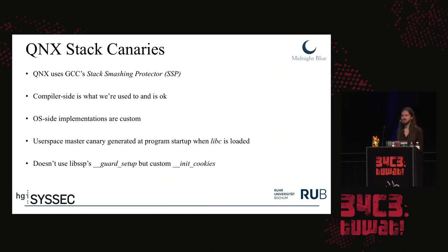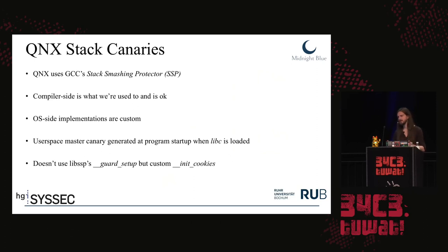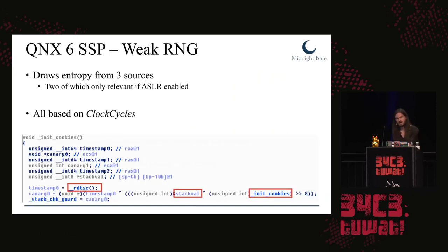QNX uses the GCC stack smashing protector implementation of stack canaries. On the compiler side it's what we're used to in Linux or BSD — mostly okay. But on the operating system side the implementation is all custom, and that's where the problems start. The user space master canary is generated at program startup when libc is loaded. Typically in the GCC implementation, libssp's guard setup function regulates this. QNX, however, uses a custom init_cookies function that uses a weak RNG, drawing entropy from three sources: clock cycles, a local stack variable address, and the address of the function itself. The last two only contribute entropy if ASLR is enabled, and even then their entropy also relies on clock cycles.